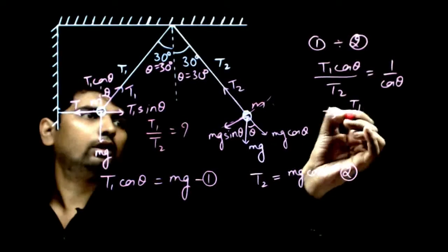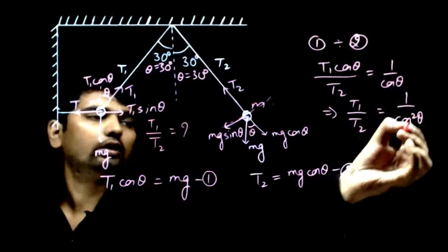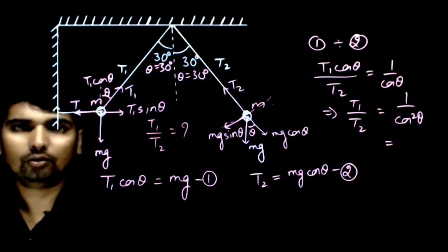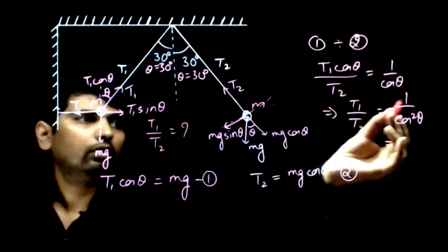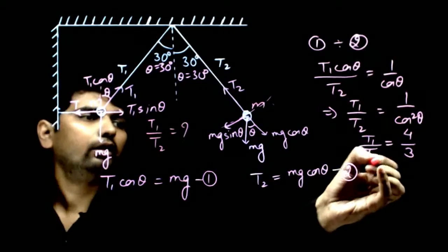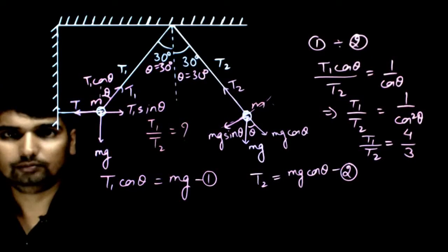This implies T1 by T2 is equal to 1 by cos square theta. If theta is 30 degrees, cos theta is root 3 by 2, cos square theta is 3 by 4. So, 1 upon 3 by 4 is 4 by 3. The value T1 by T2 is 4 by 3, that is your answer.